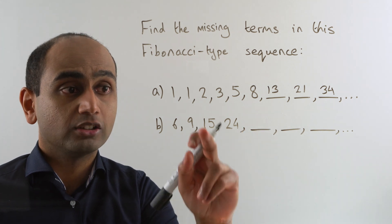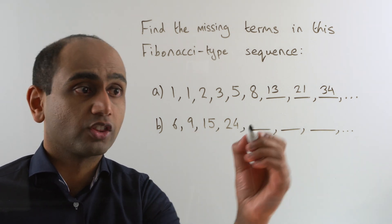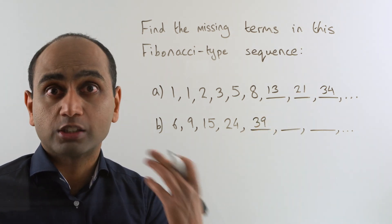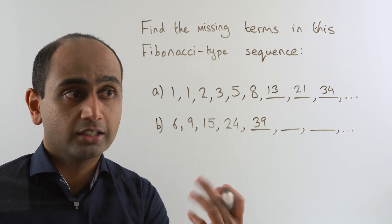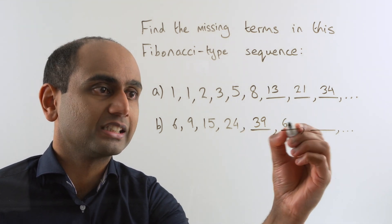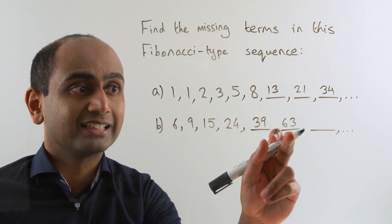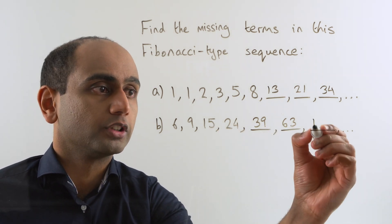So to get this term here we need to do 15 plus 24. Adding those together gives us 39. The next term is worked out by doing 24 plus 39, and that gives us 63. And to get this term here we need to add 39 and 63 together. Adding those we get 102.